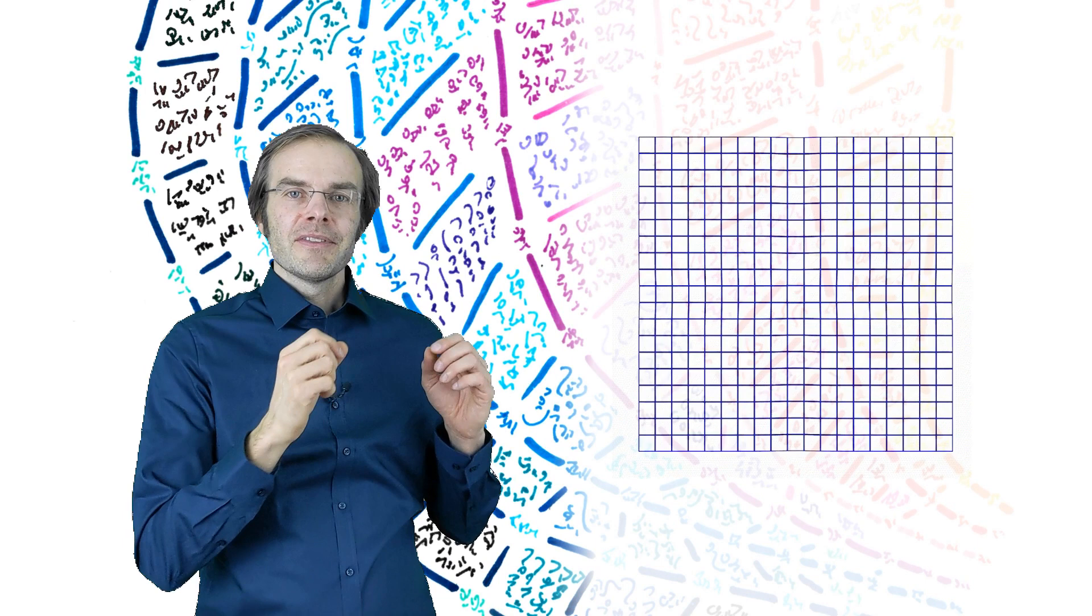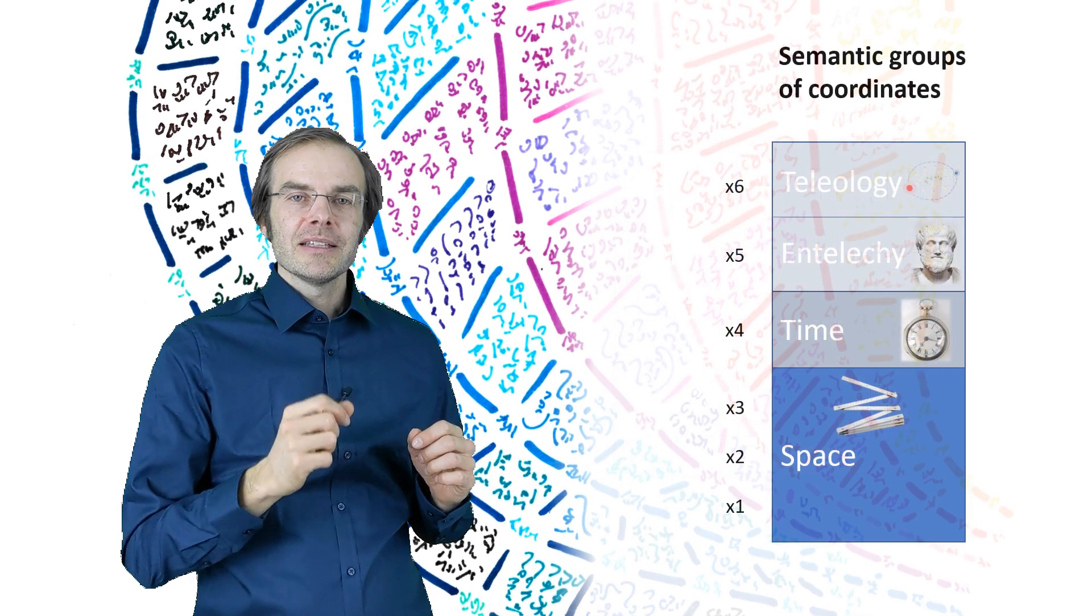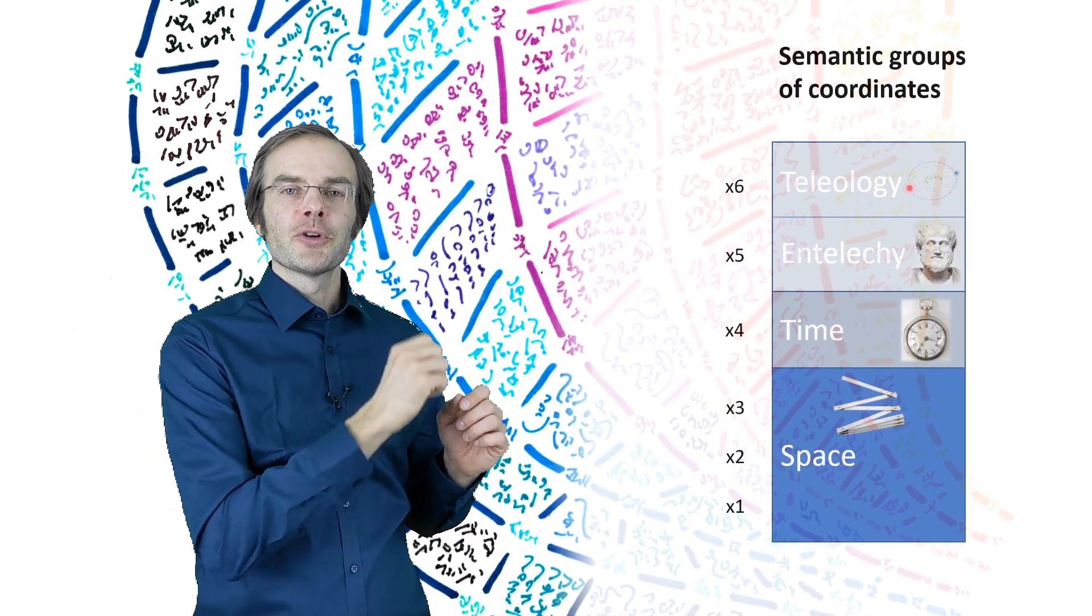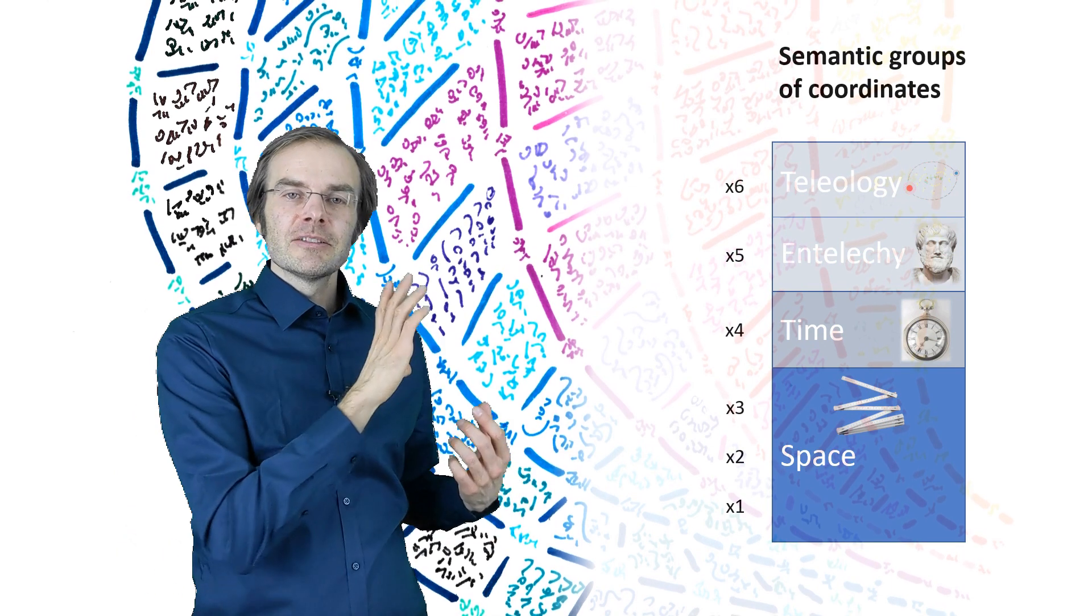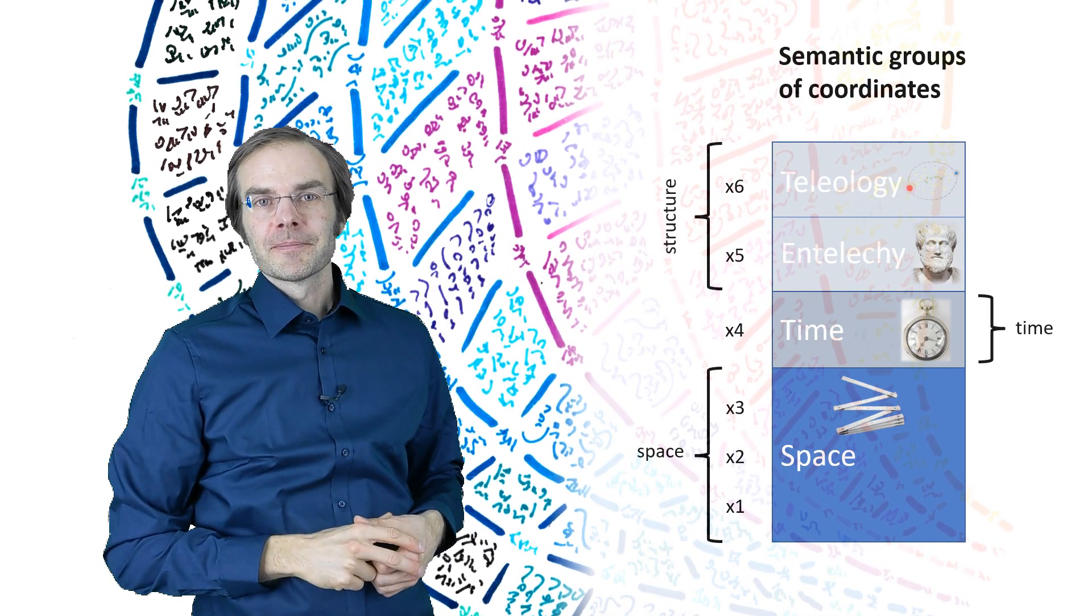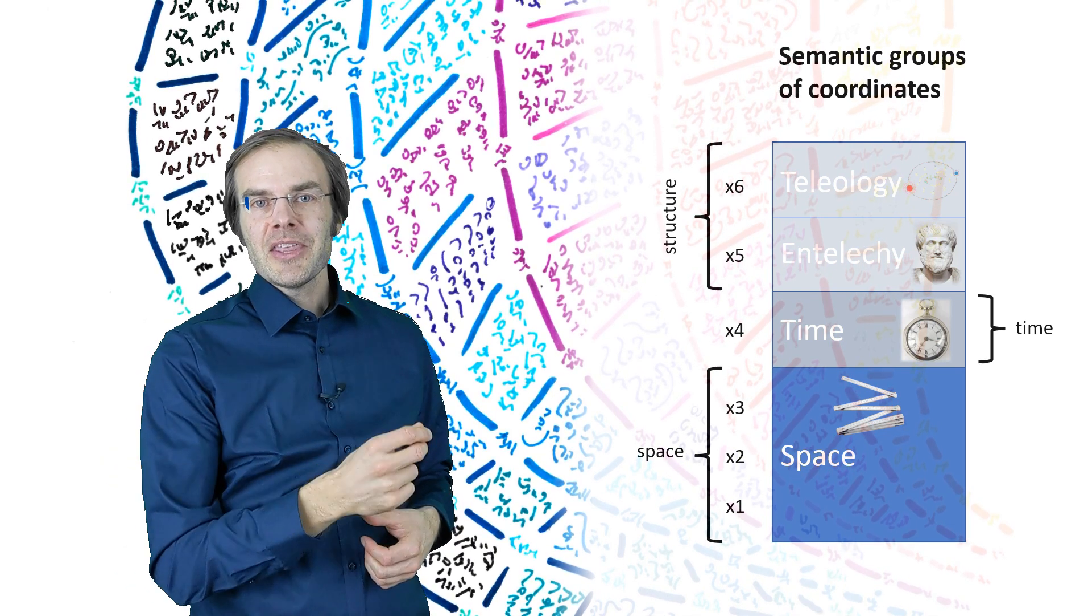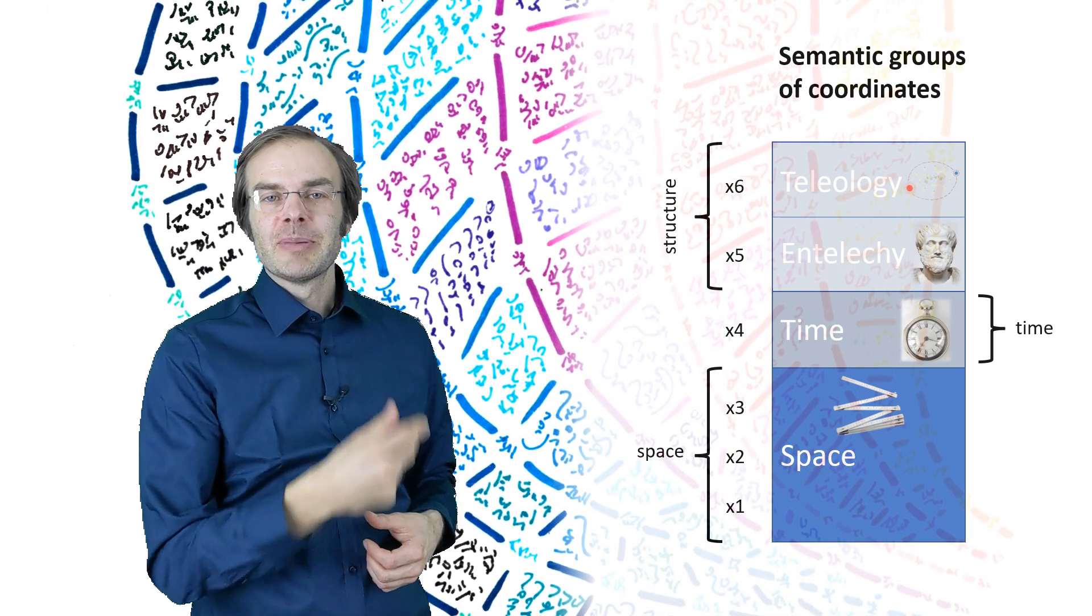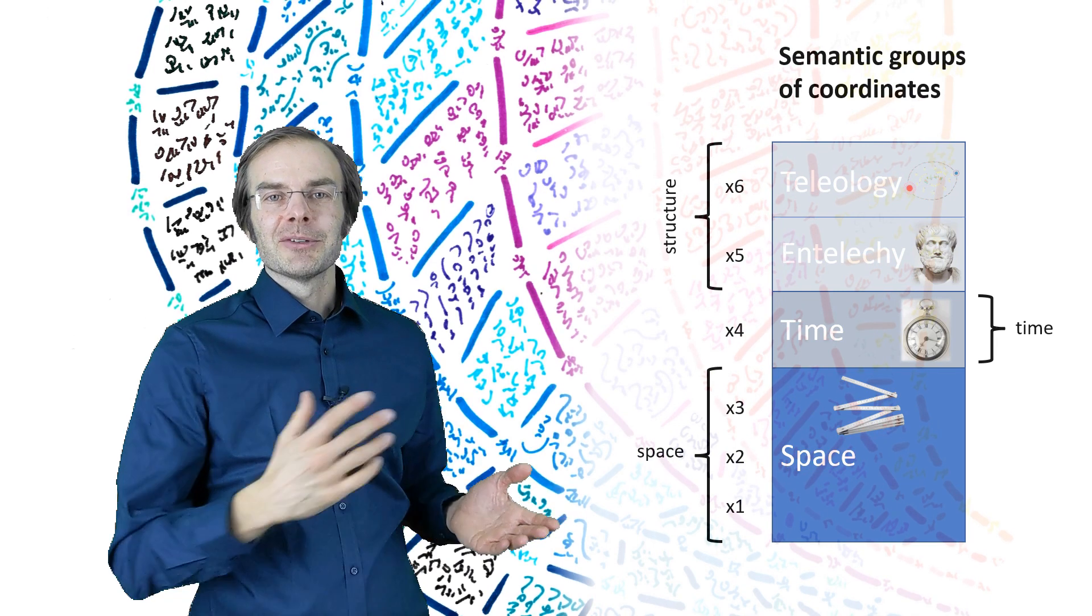And Heim found out that this condensation can only take place in certain semantical groups of coordinates, these being space, time and structure, these three. And depending on which dimensions partake, something different comes out in each case.